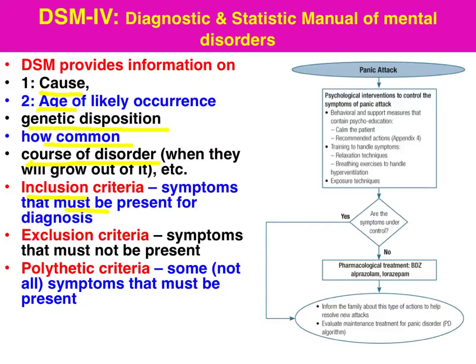Exclusion criteria exist to prevent or minimise overlap. For instance, when we have symptoms of anxiety accompanied by hallucinatory symptoms, we move into the psychotic disorder category.